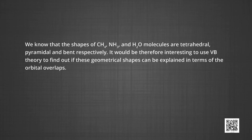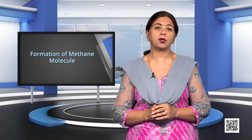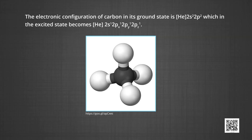We know that the shapes of methane, ammonia and water molecules are tetrahedral, pyramidal and bent respectively. It would be interesting to use valence bond theory to find out if these geometrical shapes can be explained in terms of orbital overlaps. Let us first consider the formation of the methane molecule. The electronic configuration of carbon (atomic number 6) in its ground state is [He] 2s² 2p², which in the excited state becomes [He] 2s¹ 2px¹ 2py¹ 2pz¹.